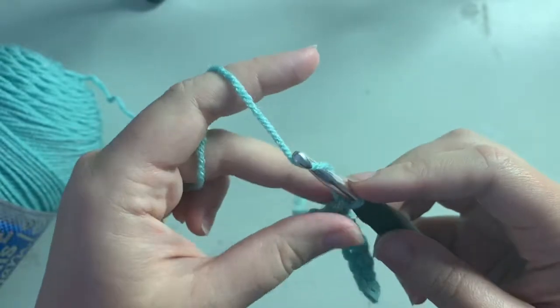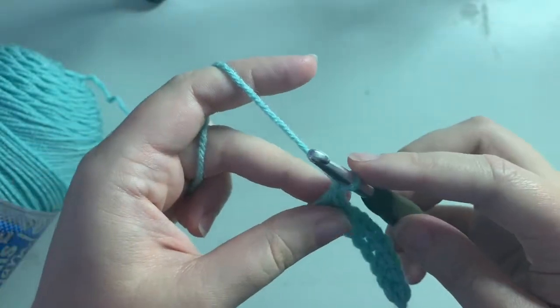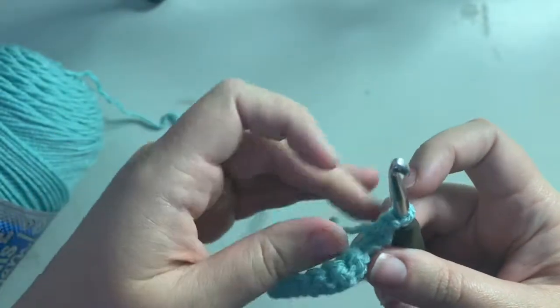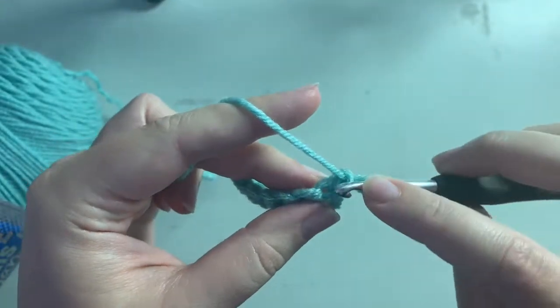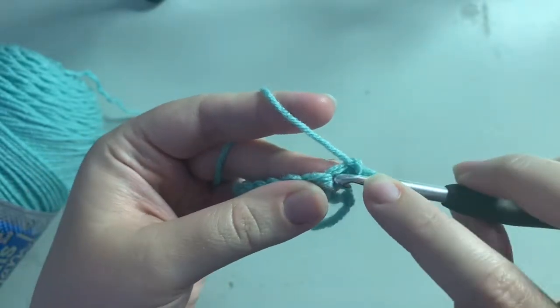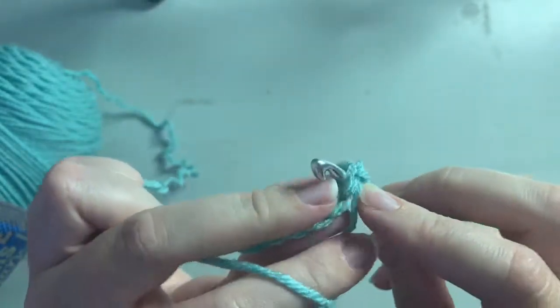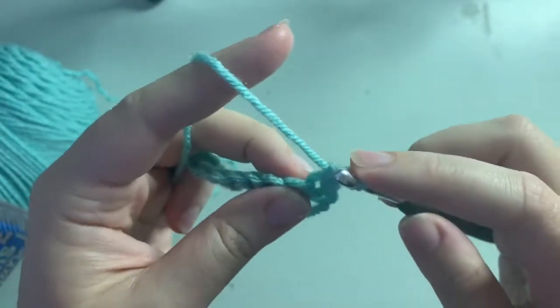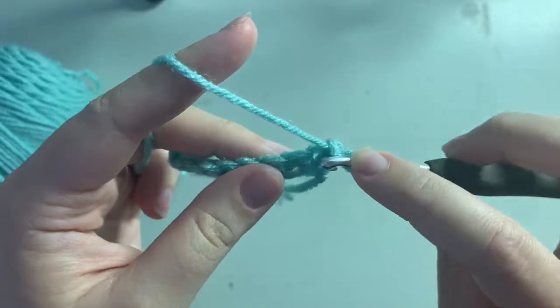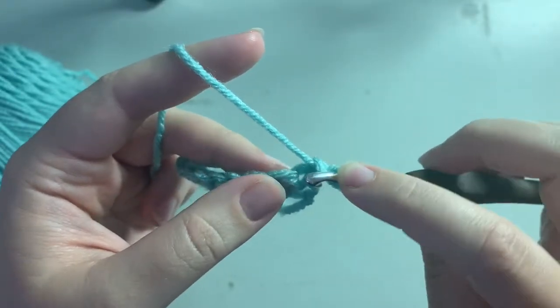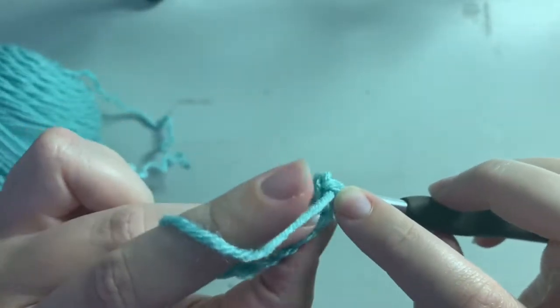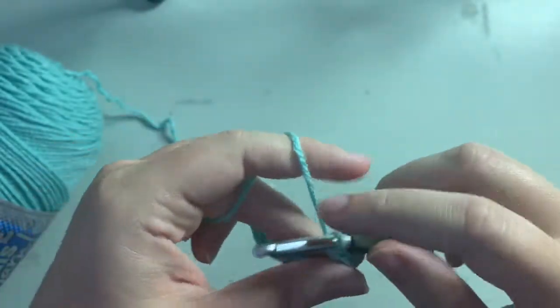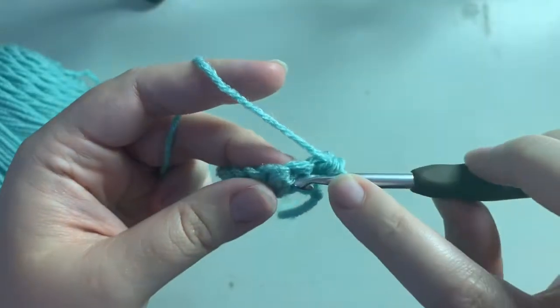So now to go on to our next row, we're gonna chain one and then we're gonna turn our work. Now the area that you work into is kind of hard to see, but just right in here we're gonna go under these two. You have a little V on top and you can see now that I stuck my hook in there it's a little bit easier to notice, but that's where we're gonna go in. Then we're gonna yarn over, pull up a loop, yarn over, pull through two.